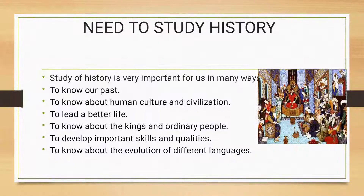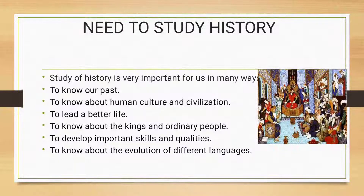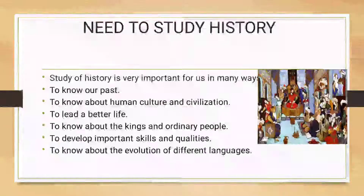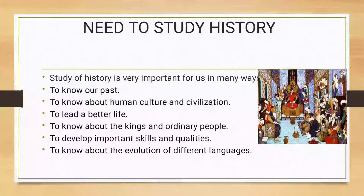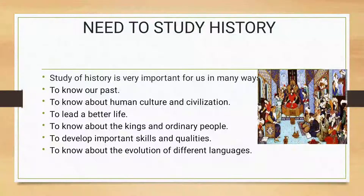Moving on to the fifth point: to develop important skills and qualities. The study of history helps us to understand the basic nature of our society. With the help of various examples, it cautions people from social evils like slavery, racialism, casteism, illiteracy, selfishness, etc. In earlier times, all these things were prevailing greatly, but we have learned from that and improved ourselves, thus developing our skills and qualities. The sixth point is to know about the evolution of different languages. History enables us to know about the origin and evolution of different languages that we speak today. These languages and scripts help us a lot to understand our past.